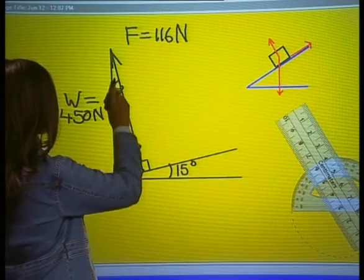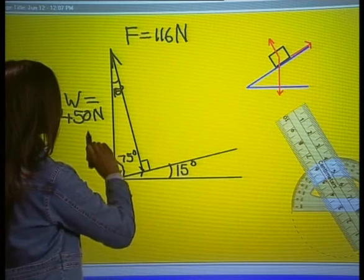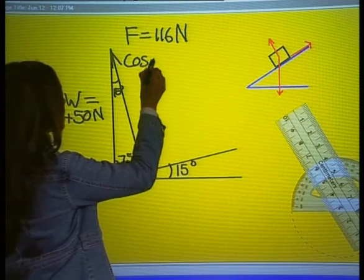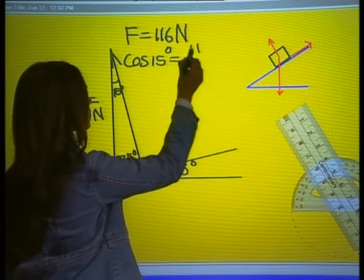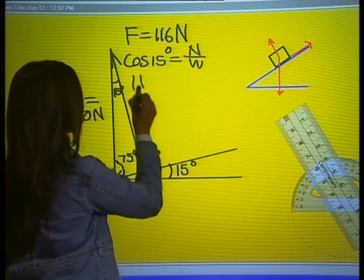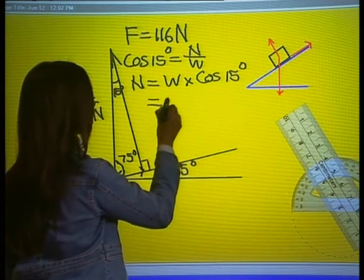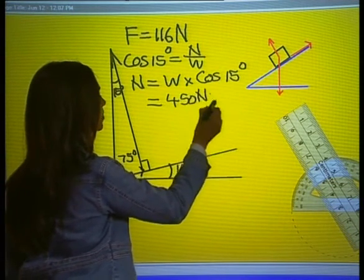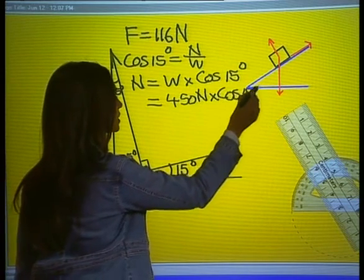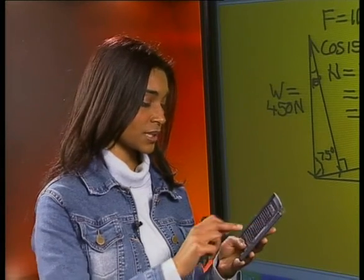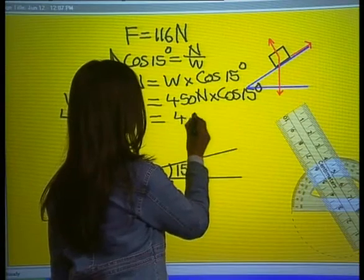Now we look at the triangle again and select a trig ratio to calculate the magnitude of the normal force. The normal force is the force vector that lies adjacent to the angle of 15 degrees, so we use the cosine ratio, which is adjacent over hypotenuse. Cos of 15 degrees equals the normal force N over the weight. So N equals the weight multiplied by cos of 15 degrees. Substituting 450 N multiplied by cos of 15 degrees gives us an answer of 435 N.